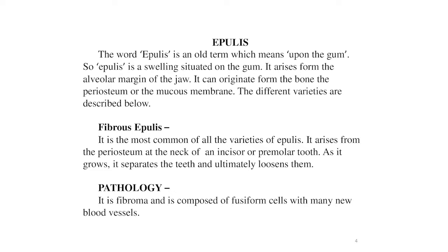Fibrous epilis is the most common variety. It arises from the periosteum at the neck of an incisor or premolar tooth. As it grows it separates the teeth and ultimately loosens them. The pathology is that it is a fibroma composed of fusiform cells with many new blood vessels.